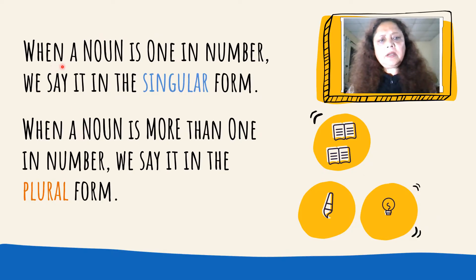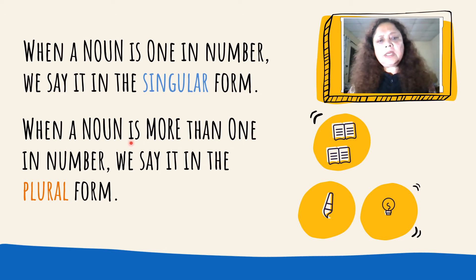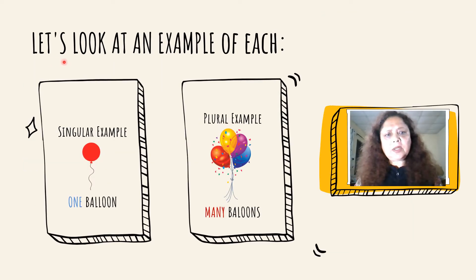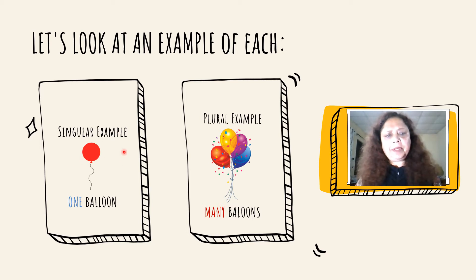When a noun is one in number, we say it in the singular form. When a noun is more than one in number, we say it in the plural form. Let's look at an example of each. Singular example: one balloon. Plural example: many balloons.